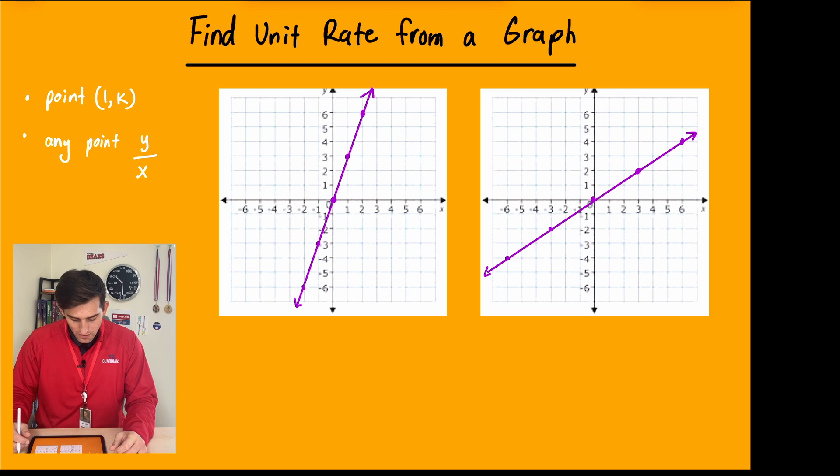All right, so here we go. So two ways to find the unit rate. Number one, the easiest way, is if you're looking at a graph and it has a point where x is equal to 1. So if x is equal to 1, whatever the y value is there of that point, that is your constant of proportionality, that is k, that is your unit rate.